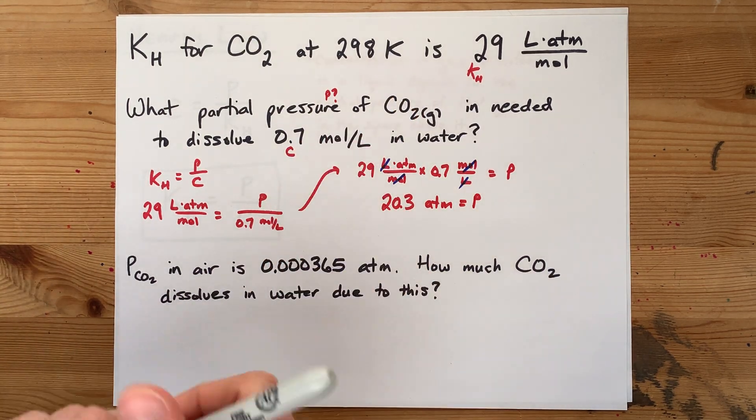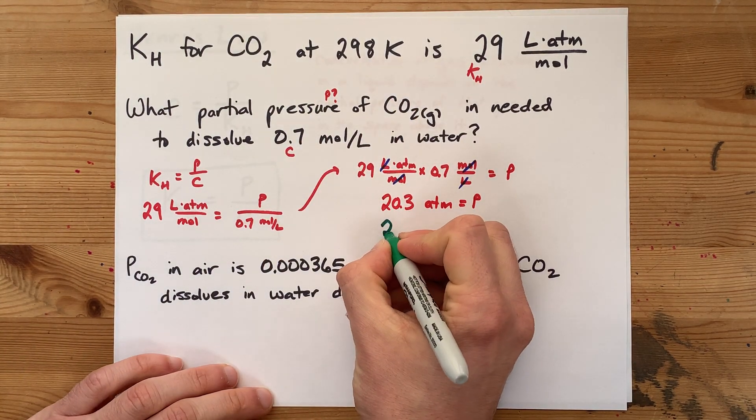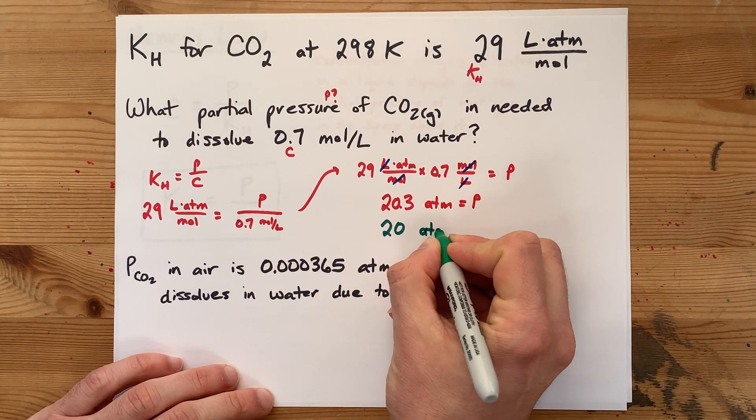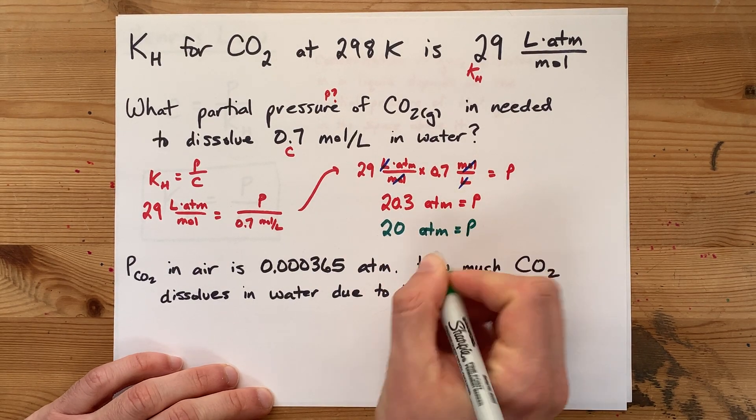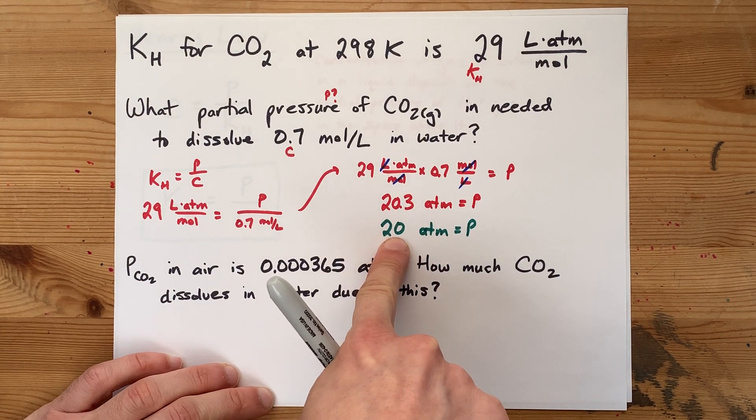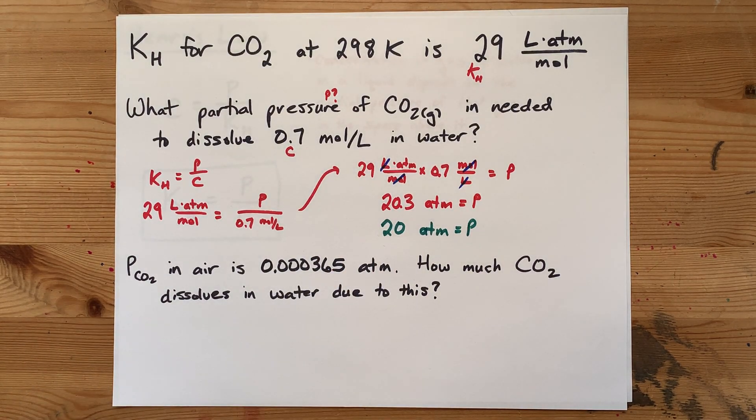Now I know I haven't done sig figs here. This number only has one significant figure, so officially you write your answer as 20 without a decimal place. There's one significant figure there, and the trailing zero doesn't count because there's no decimal.